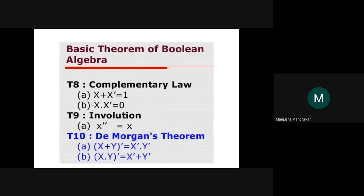Theorem 8 is the Complementary Law: A OR A-complement equals 1 — if A is 1, then 1 OR 0 equals 1; if A is 0, then 0 OR 1 equals 1. A AND A-complement equals 0. Theorem 9 is the Involuntary Law: X double-complemented equals X. If X equals 0, complement is 1, and complement of 1 is 0 — returning to the original value.